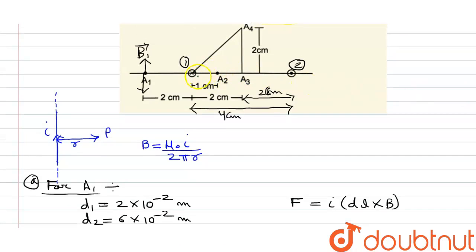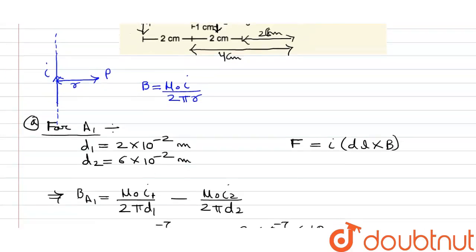Now we calculate the net magnetic field at point a2. Point a2 is situated 1 centimeter away from wire number one. Due to wire number one, for which current is flowing inside the plane, the magnetic field direction will be in the downward direction. Due to wire number two, the magnetic field will also be in the downward direction, as found by the right-hand thumb rule.